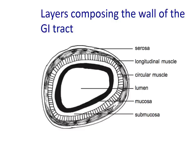In addition to the involuntary muscles found in the wall of the gastrointestinal tract, the mouth, pharynx, oesophagus, and anus also contain some voluntary muscles under the control of the will.